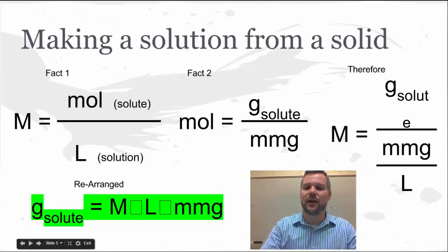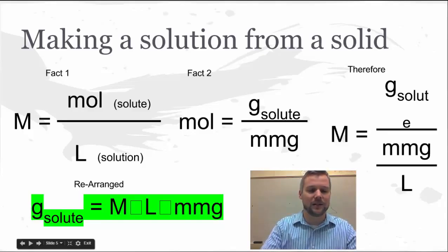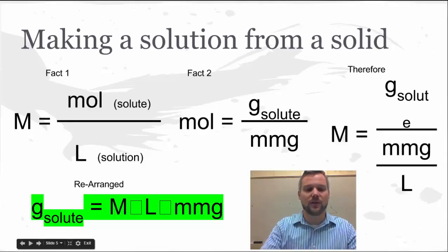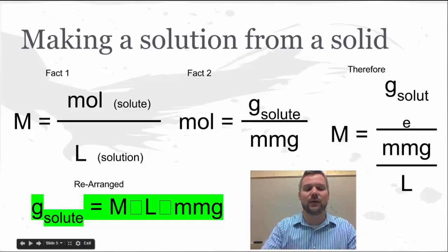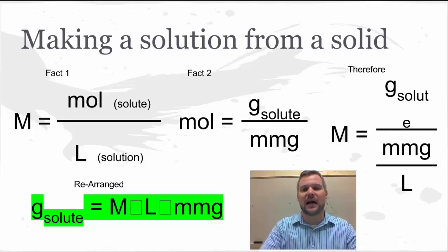That gets rearranged into an easier equation: G equals molarity times the volume of your solution times your molar mass in grams. This equation works well because normally we're solving for the number of grams we want. We know the molarity of the solution we'd like to make, we know what size volumetric flask we're going to use, and we can look up the molar mass in grams. So that's the approach if you have a solid — and a lot of our chemicals do come in solid format.